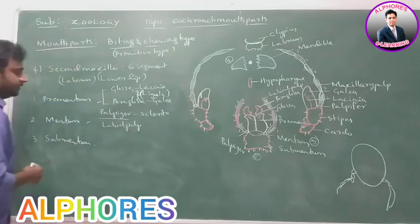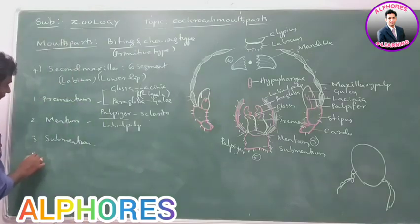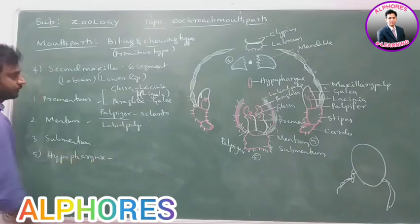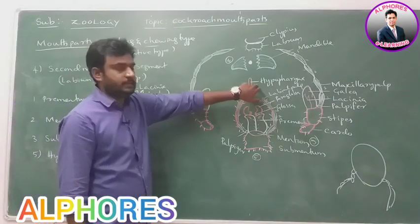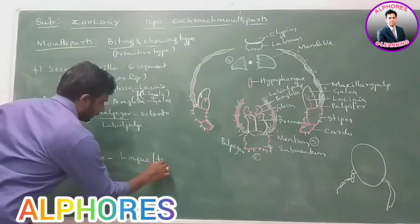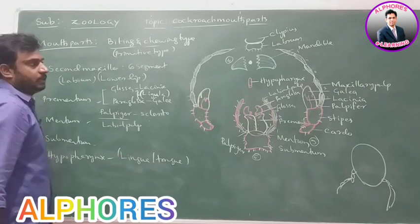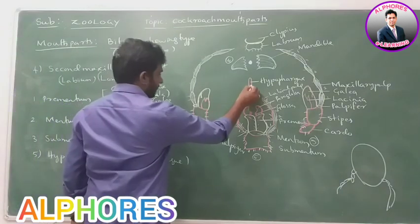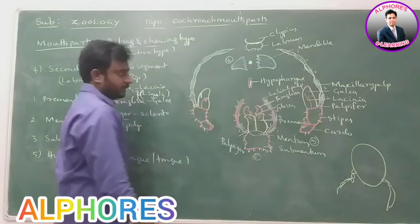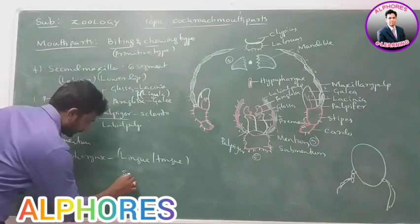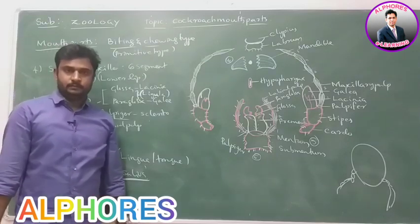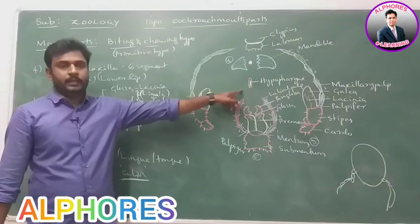One more part is present which is called hypopharynx. Hypopharynx is also called lingua or tongue. It is a rod-like grooved structure and is unpaired — only one is present. It is useful for the releasing of saliva into the mouth through its groove.